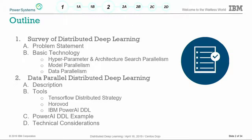We'll start with a survey of distributed deep learning in general, go into the different ways you can distribute it, and give an overview of each. We'll really drill down into data parallel distributed deep learning, which is the most commonly used method right now. We'll end with an example and look at some specific technical considerations — basically gotchas you usually run into when first distributing a deep learning project.